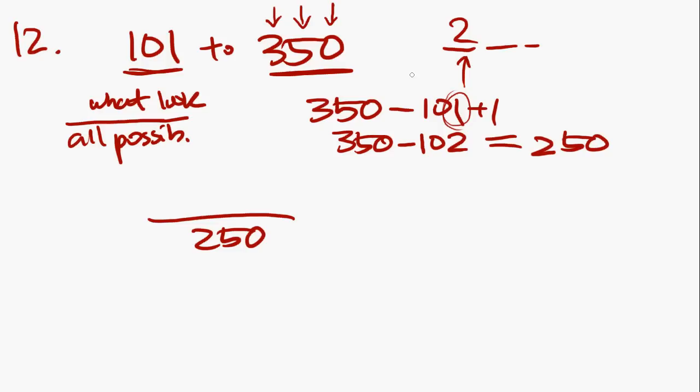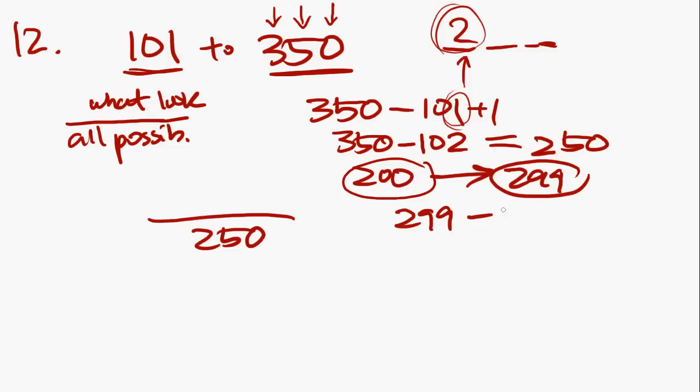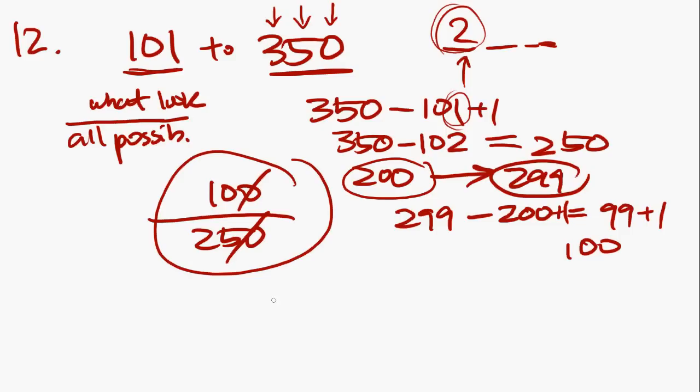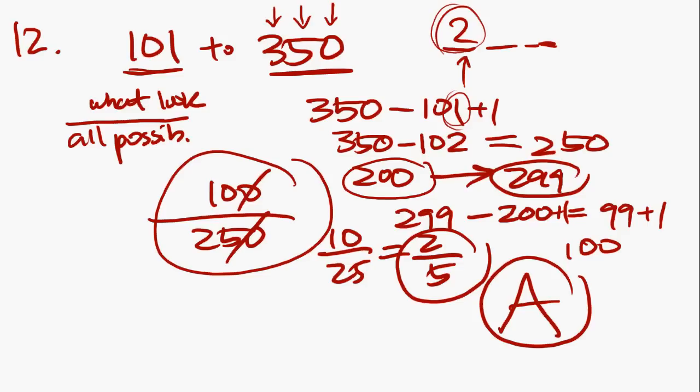Now we have to count the number of numbers that have a 2 in their hundreds digit between 101 and 350. So those numbers are going to be 200 all the way to 299. Take 299, subtract 200, don't forget to add the 1, and you get 100. So there are 100 possibilities out of 250. Kill the zeros, 10 out of 25, divide by 5, and you get 2 over 5 as your answer. And that is A.